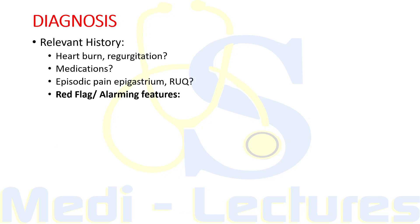As we are sitting in OPD, time is limited, so whatever we ask should be relevant. Points in relevant history include: history of heartburn or regurgitation, which can be suggestive of gastroesophageal reflux disease leading to reflux esophagitis; history of medications the patient is taking — importantly NSAIDs, glucocorticoids, calcium channel blockers, potassium supplements, iron supplements — all can lead to dyspepsia. Episodic pain in epigastrium or right upper quadrant can be suggestive of cholelithiasis.